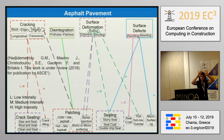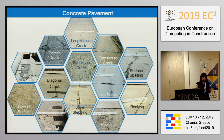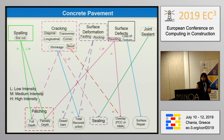I continued this work for concrete pavement, which has almost similar defects to asphalt with only a few differences — for example, the box-out defect, which doesn't exist as much in asphalt pavement. Following the same structure, I put separate defects with different colors mapped to separate maintenance techniques. For instance, medium-intensity spalling maps to a full depth patching technique.